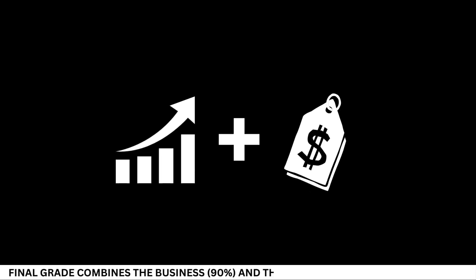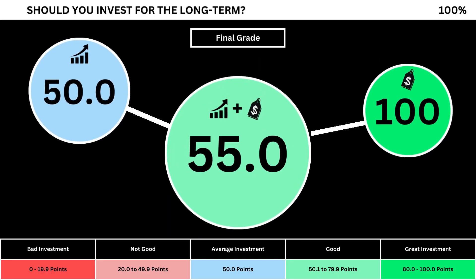Finally, we can put everything together to get the company's final grade. Adding the business grade and the fair price grade, we can see the company's final grade here. Anything less than 50 means it's not a good long-term investment. A final grade above 50 means it would make a good long-term investment if you bought the stock right now.